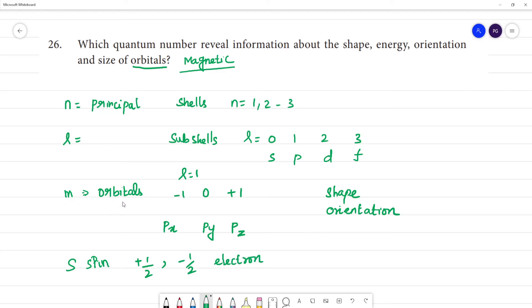So about orbitals, all information is revealed by magnetic quantum number.